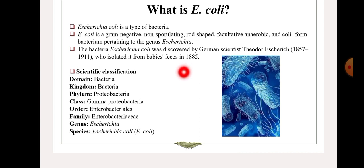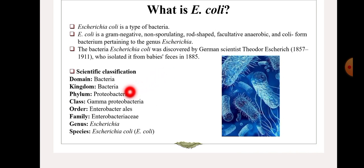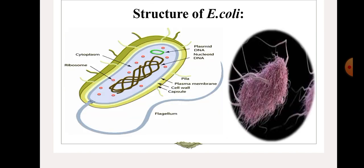Moving to the next slide — scientific classification. We all know the five kingdom classification: domain, kingdom, phylum, class, order, family, genus, and species. The domain of E. coli is Bacteria, kingdom Bacteria, phylum Proteobacteria, class Gammaproteobacteria, order Enterobacteriales, family Enterobacteriaceae, genus Escherichia, and species E. coli.